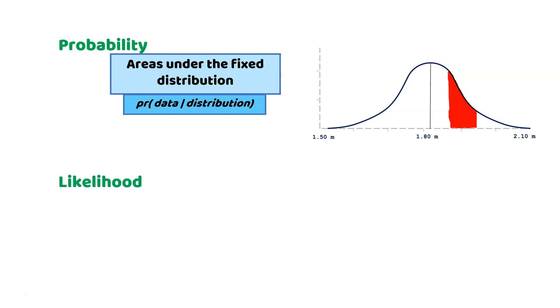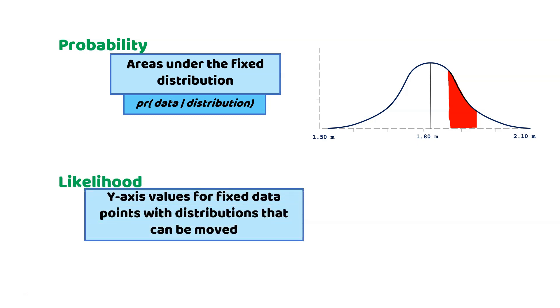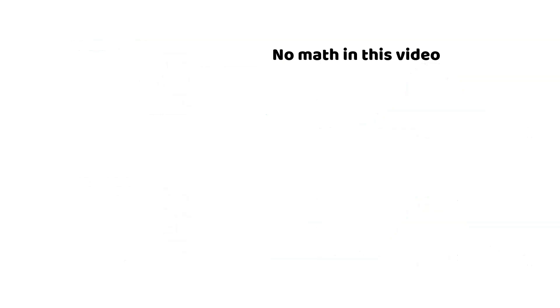Likelihoods are the y-axis values for fixed data points with distributions that can be moved. Mathematically, this is defined as the likelihood of a distribution given data. In this video, I'm not covering actual equations in order to not confuse you. My goal is to deliver the intuition of differences between probability and likelihood.